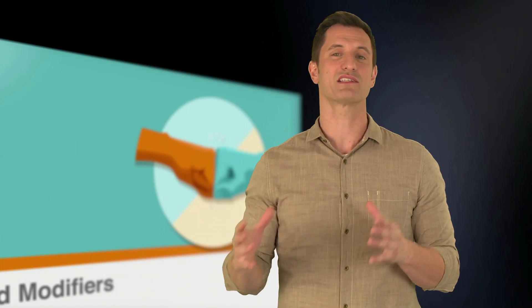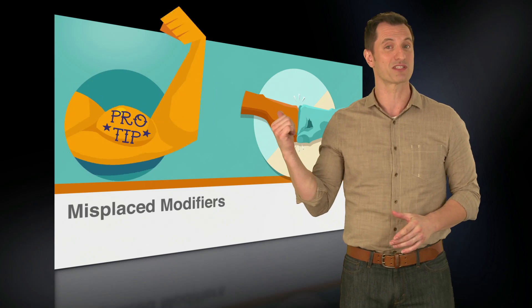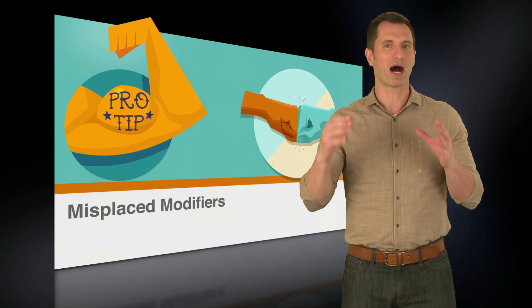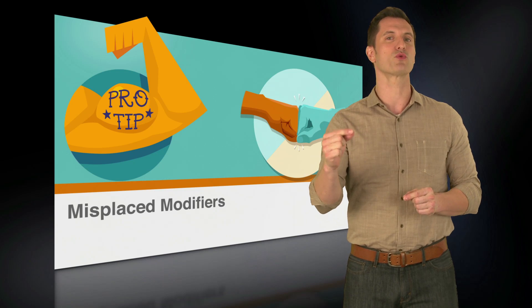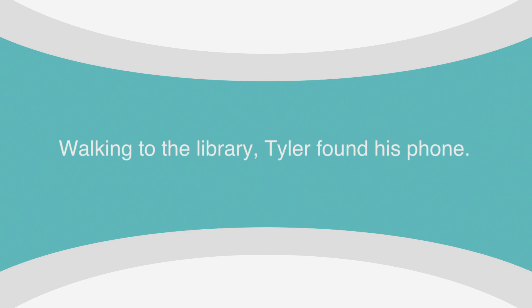Misplaced and dangling modifiers are all about making sense of nonsense. Here's a pro tip: modifying phrases should be near the word that they are describing. Generally, everything that comes before the comma modifies what comes after it. So in the sentence 'Walking to the library, Tyler found his phone,' 'walking to the library' comes just before the comma and modifies 'Tyler found his phone,' which comes after the comma.